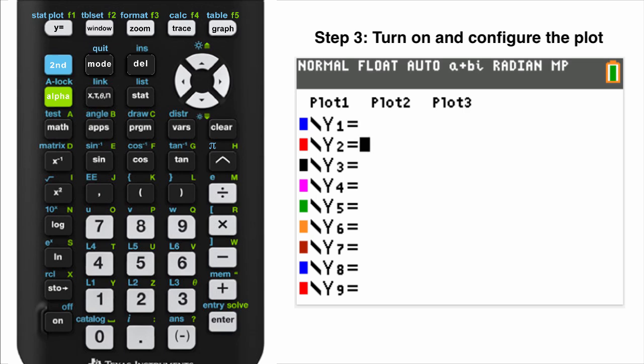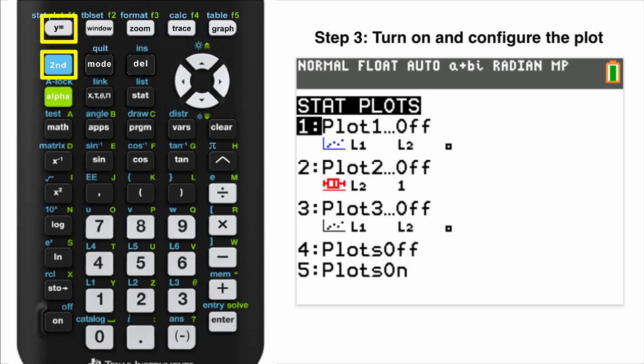Step 3: Turn on and configure the plot. Press the 2nd key and the Y equals key. This is the initial stats plot screen. You can see here that the three available plots are all turned off. You're going to use plot 1. Press the Enter key.